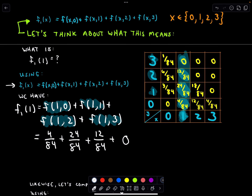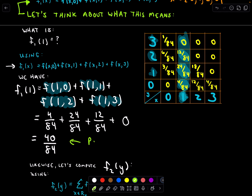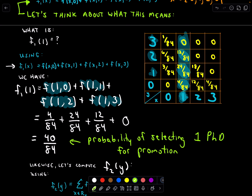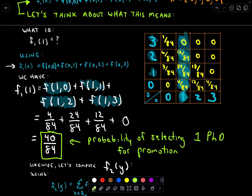Summing those up: 4 + 24 + 12 = 40, giving us 40 out of 84. And again, this is just the probability of selecting exactly one PhD for promotion. We're selecting three people at random — what's the probability that we end up selecting only one person with a PhD? The probability of that is 40 out of 84.